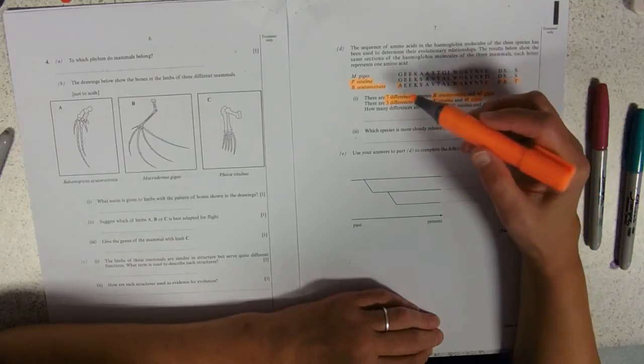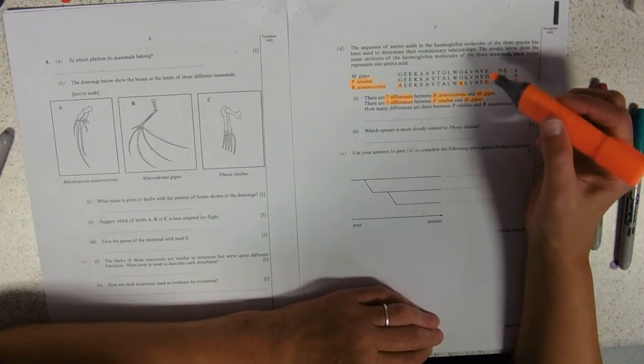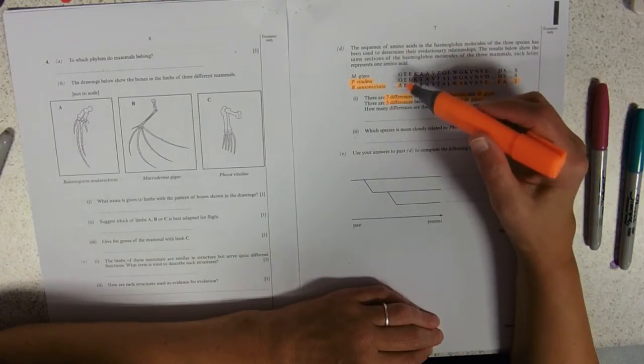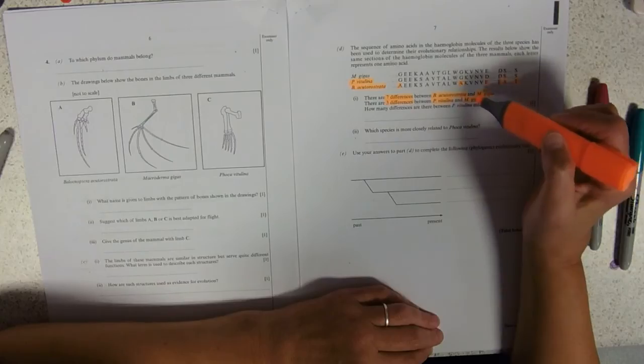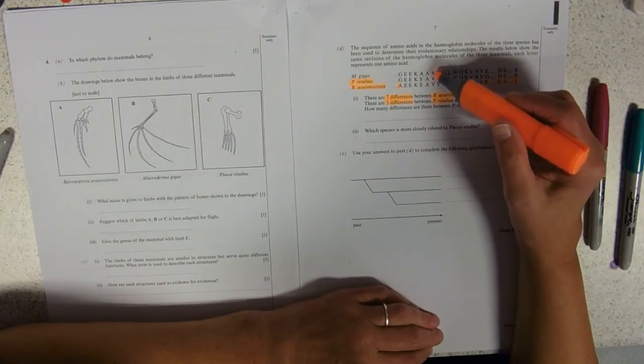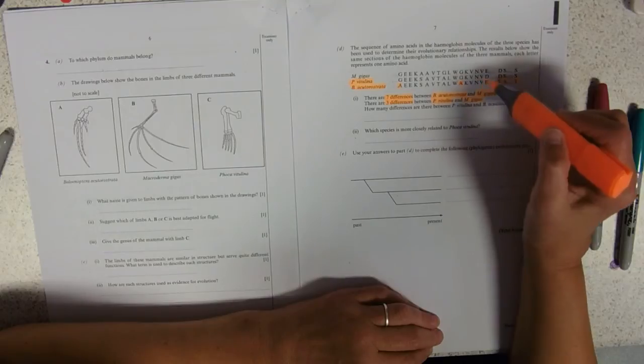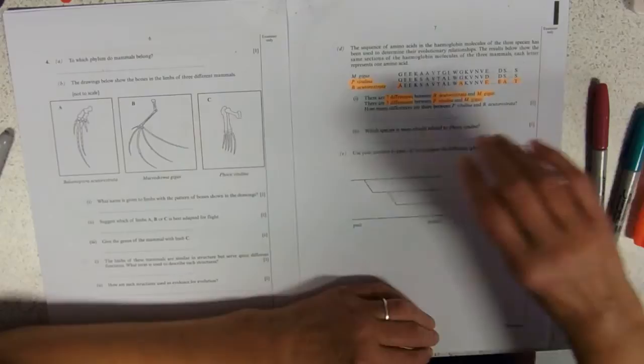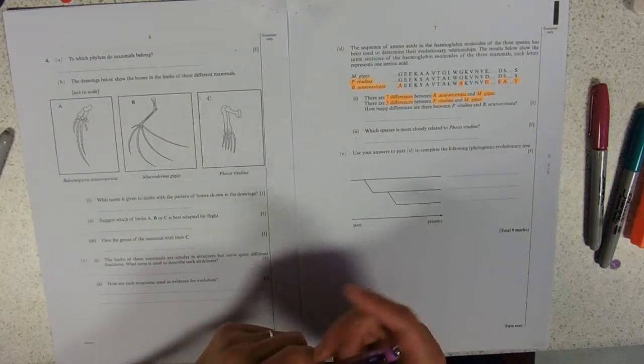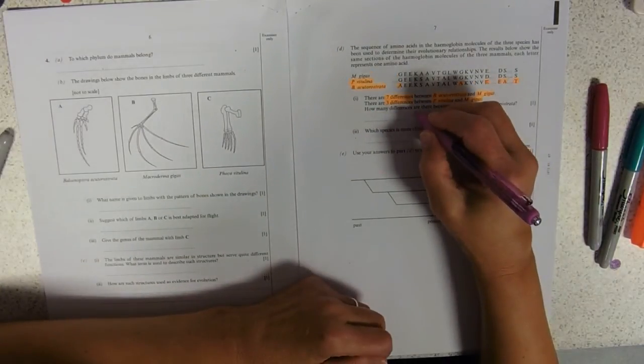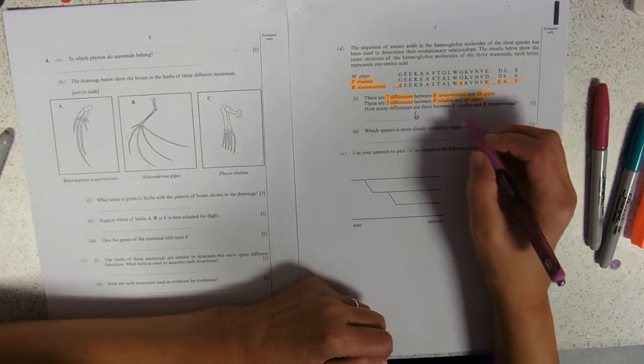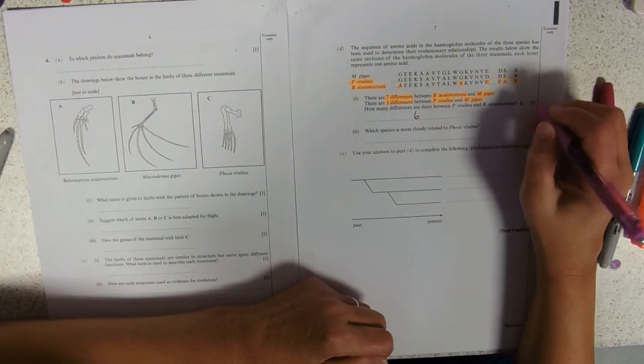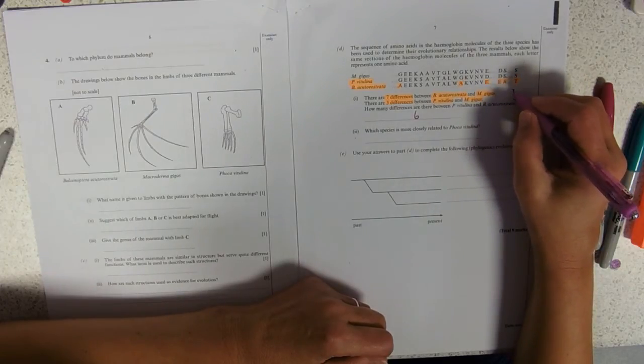when you're sort of doing a phylogenetic tree, they're trying to sort out how these three organisms are related. They're counting the differences between M. gigas and B. acutostrata, and between P. vitulina and M. gigas, and then just left you this one to do. You might have to do all of those. So, here we go. You've got six differences. Which species is more closely related to Foca vitulina? So, we've got six differences there, three there, and seven there.